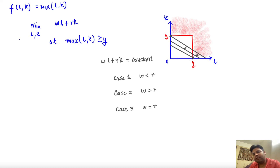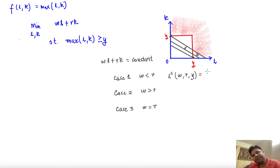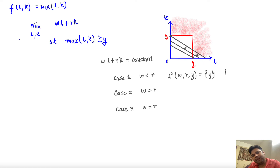The optimal choice in Case 1 (w < r) is to employ only y units of labor. So the conditional labor demand is l_c = y, and the conditional capital demand is k_c = 0.